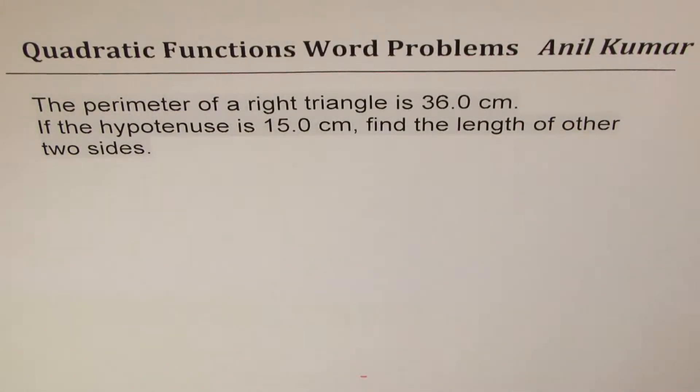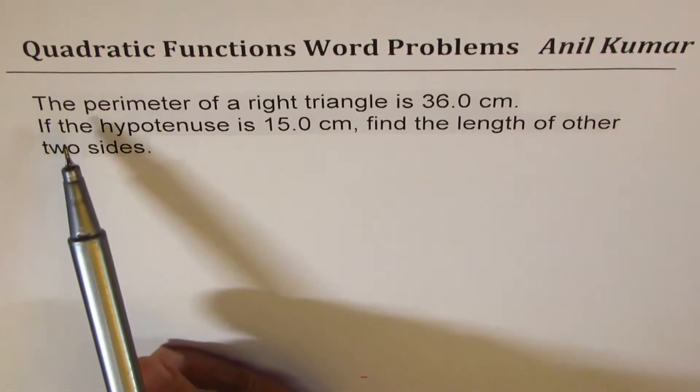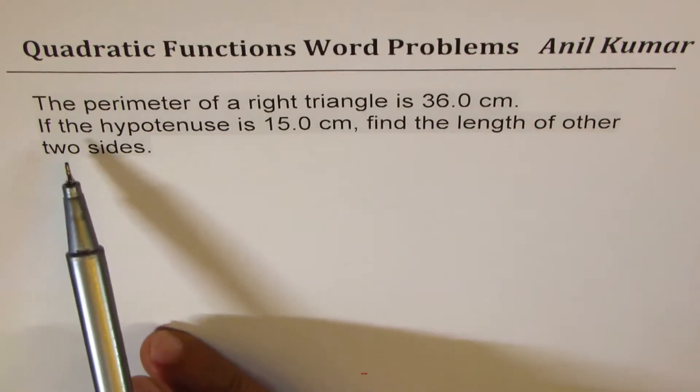I'm Anil Kumar, here is a question based on right triangles. We'll try to find the sides of the triangle given hypotenuse and some other condition. The question here is: the perimeter of a right triangle is 36 centimeters.